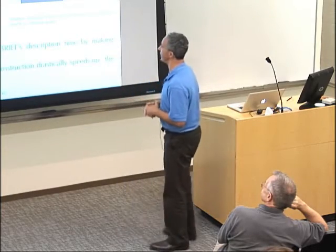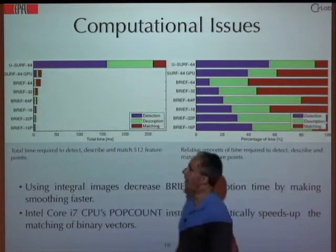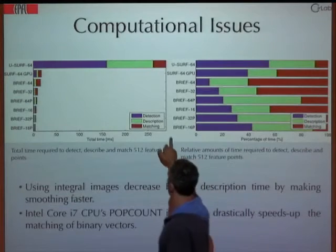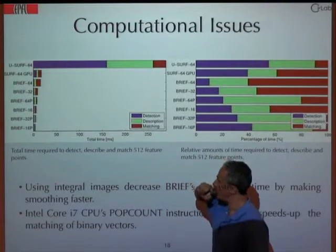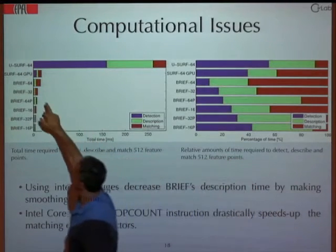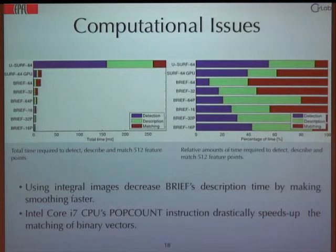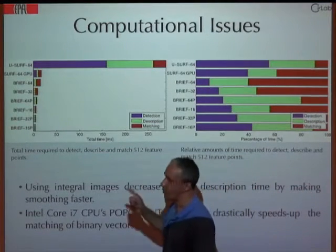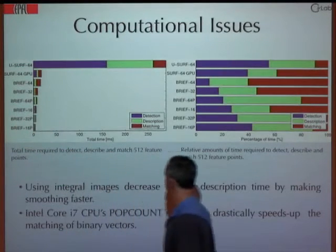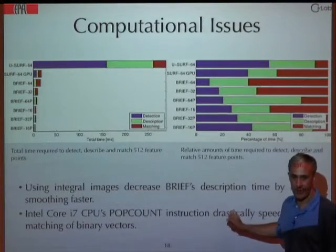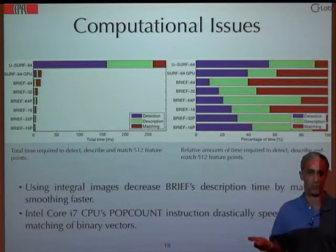Here are some computational times. On a machine like this Mac, if you use SURF it takes a certain amount of time. If you use BRIEF, it's much, much shorter. There is a version of SURF on the GPU which is much better than the CPU version, but the point is we can do better than SURF on GPU without using a GPU — this is still CPU. One thing that speeds it up a lot is that modern CPUs can compute the Hamming distance — which is what you use for matching — in essentially one instruction. That's one of the key reasons to use binary descriptors.